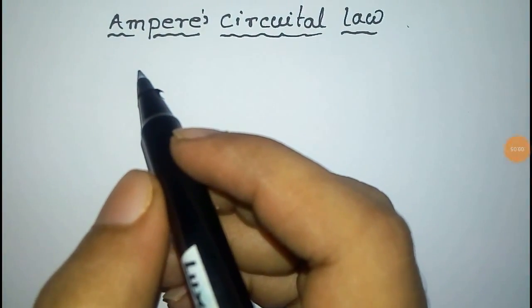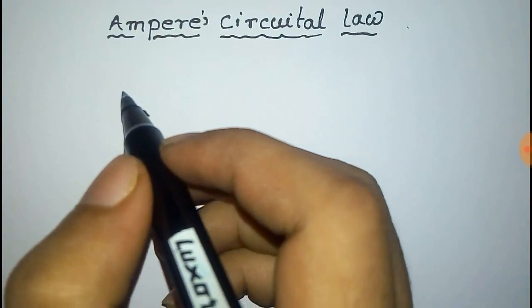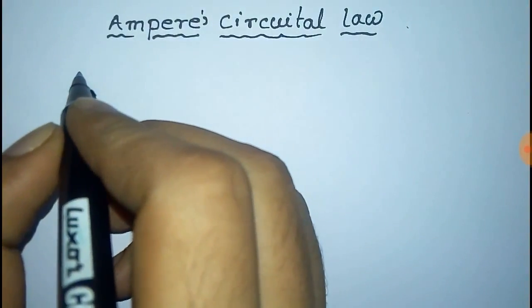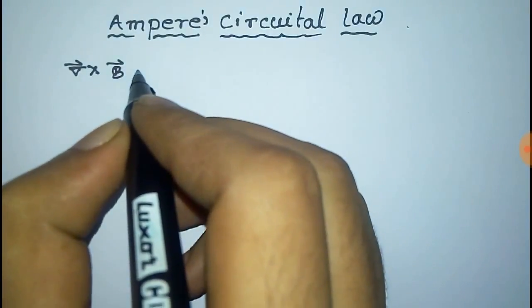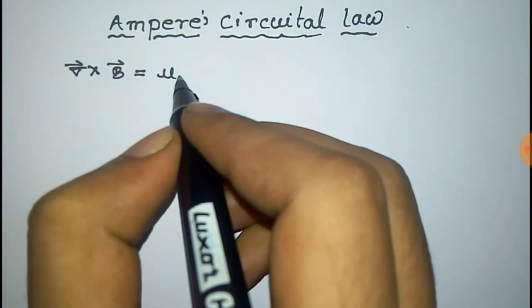We have to derive the Ampere circuit law. For this we use the relation that curl B is equal to μ₀ J vector.